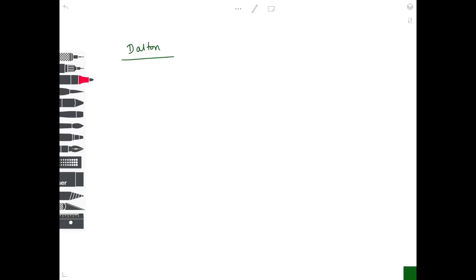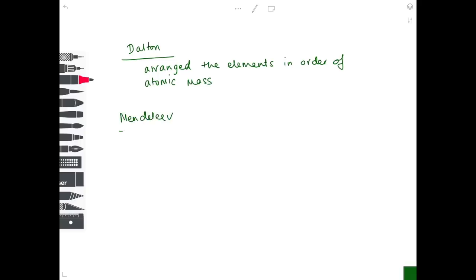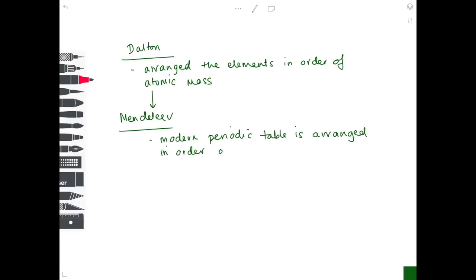Various scientists arranged the periodic table. Dalton arranged elements in order of atomic mass. Mendeleev, the father of the modern periodic table, also arranged elements by atomic mass — which we now know is incorrect. The modern periodic table is arranged in order of atomic number, which you can verify by checking the key in your periodic table.